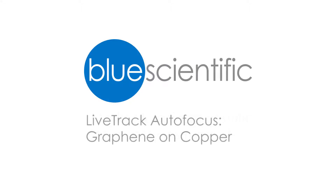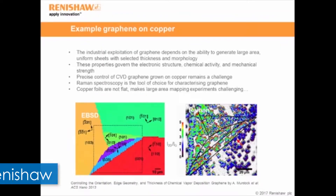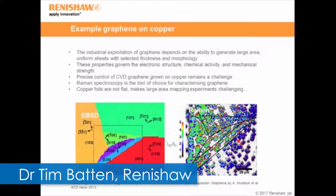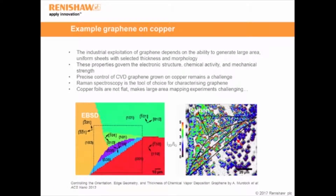I want to continue with a few examples of LiveTrack in action. The first example is looking at graphene and copper. Graphene is an interesting material — it has absolutely amazing electrical properties and great potential to be used in future technologies.